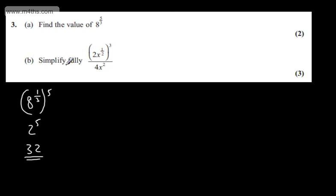In part B we need to simplify fully 2x to the half cubed over 4x squared. The question carries 3 marks.